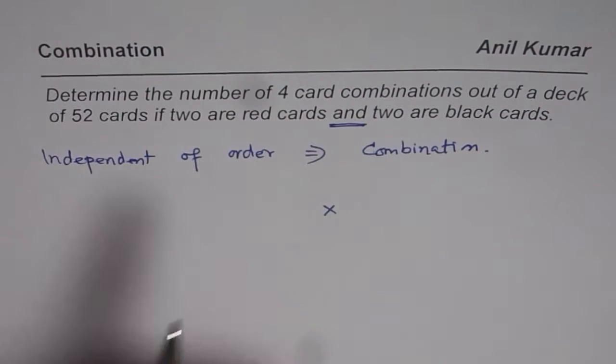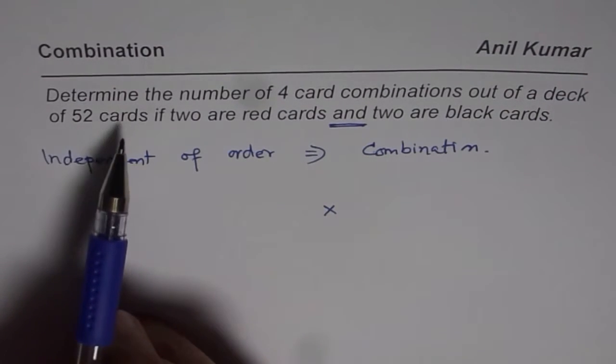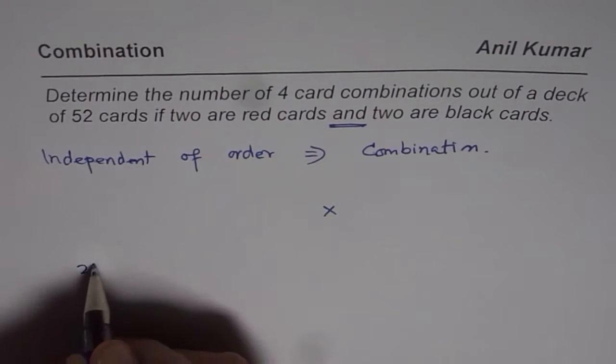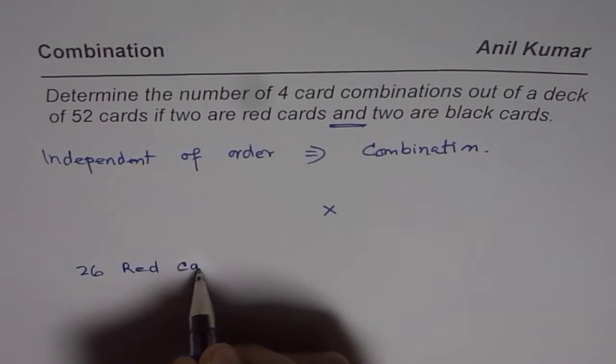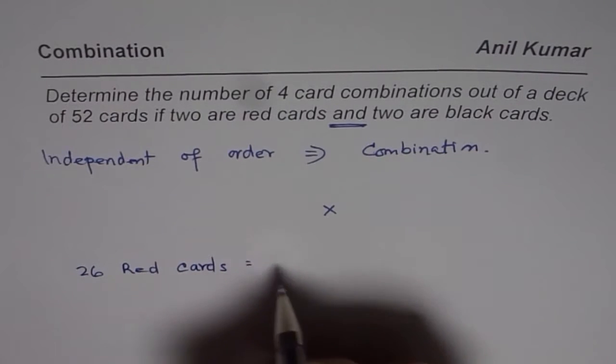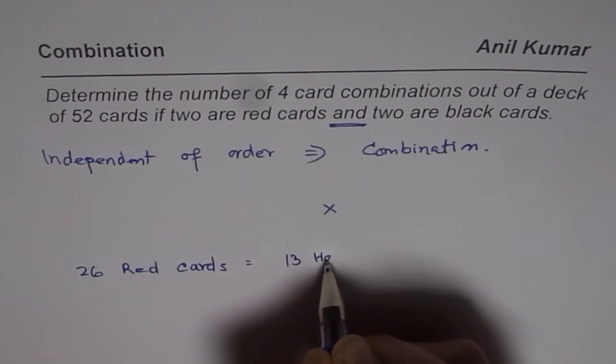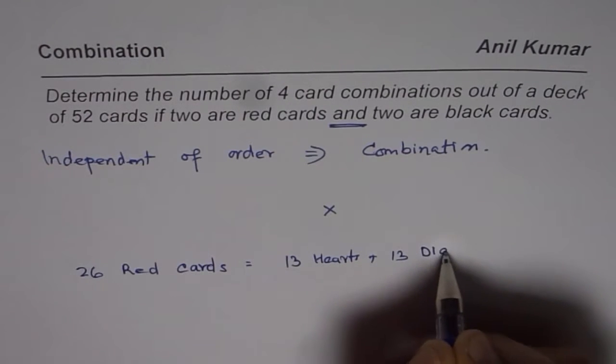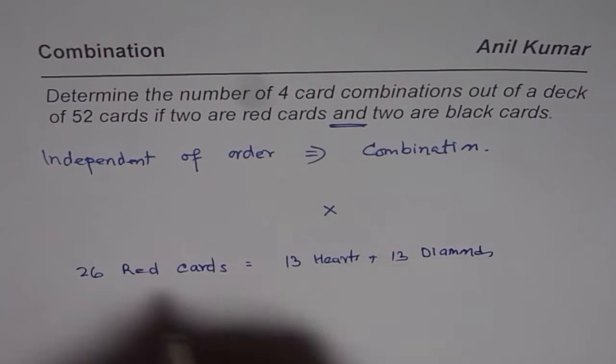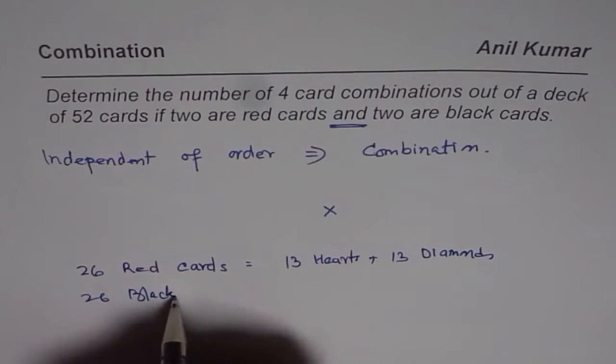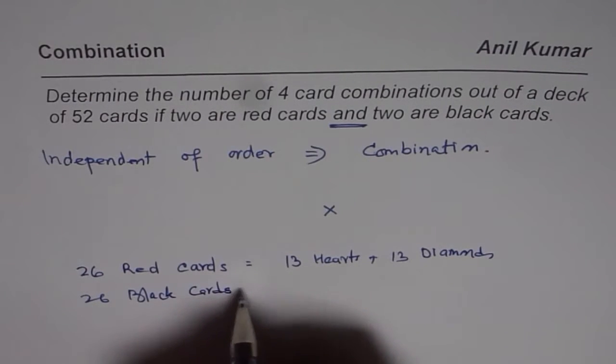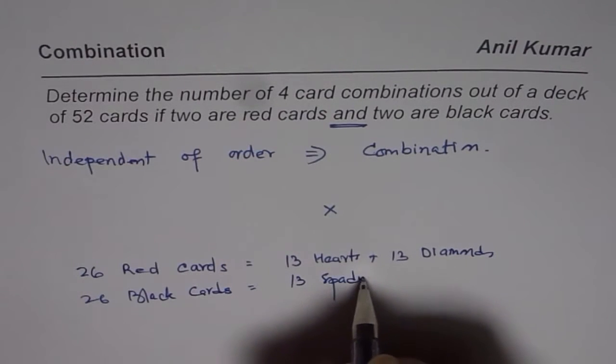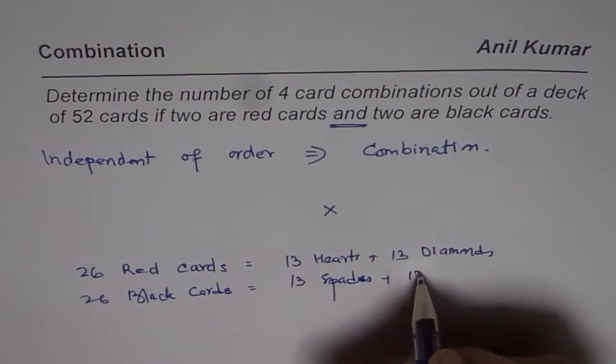Two are red. Now, in a deck of 52 cards, how many are red? We know there are 26 red cards, which is 13 hearts plus 13 diamonds. And there are 26 black cards, 13 spades plus 13 clubs.